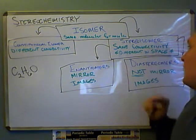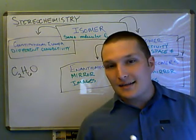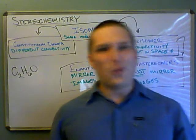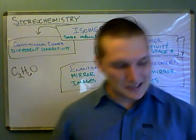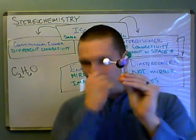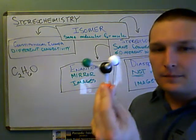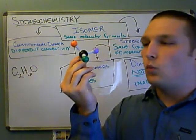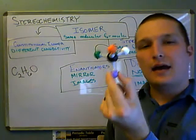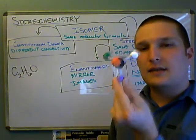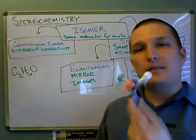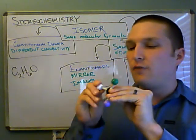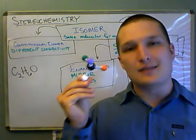A stereoisomer has the same connectivity, but they differ by the arrangement of atoms in space. Here I have one white, one orange, one purple, and one green all connected to this carbon. The thing about carbons is they're SP3 hybridized, so they like to have four things bonded to them. The nature of three-dimensional space is that if you have four things attached to one thing, they can be arranged in different ways in space.